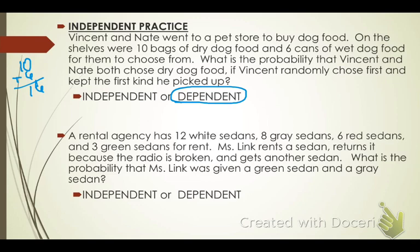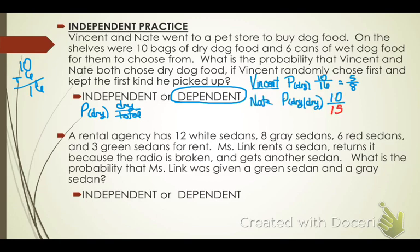There's a total of 16 bags. Vincent had 10 dry out of 16. When Nate got up there, he had 10 dry out of 15 because Vincent had already taken one of the bags. Notice that only the total changes — we don't change the top number. We reduce those fractions and multiply them because we use the word 'and,' and we get 10 twenty-fourths, which reduces to 5 twelfths, which is 0.42 or 42 percent.